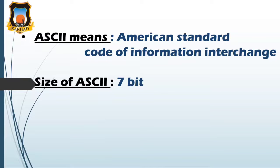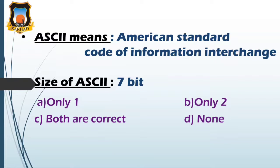Next question: ASCII means American Standard Code of Information Interchange. The size of ASCII is 7 bit. The options are: only first is correct, only second is correct, both are correct, and none. So the correct answer is both are correct, as we know ASCII means American Standard Code of Information Interchange, and the size of ASCII is 7 bit code capable of representing 2 raised to 7, that is 128 number of different characters.